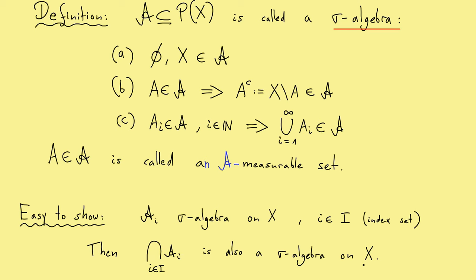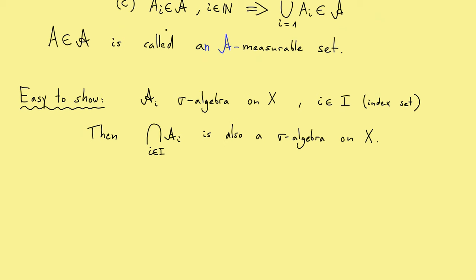This result is very helpful if you want measurable sets to have a lot of properties. You can put the properties in different A_i's and then form the intersection to get a sigma algebra where all your measurable sets have all the desired properties. In short, this result helps you a lot when you want to define a suitable sigma algebra for your problem.